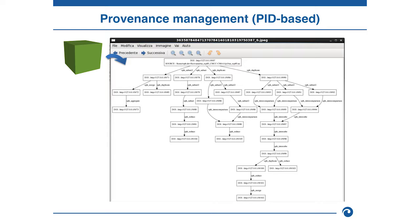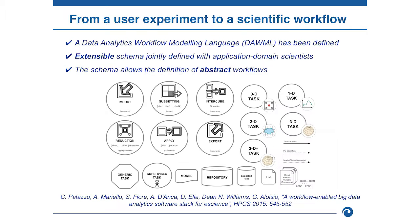Another example of provenance management — this is a more complicated example. As you can see, we have many branches starting from a single input cube, with many operations reaching a set of outputs. As I said at the beginning of my presentation, the architectural version 2.0 moves to develop a new feature concerning specifically the support for workflow management. We developed another module integrated into the server in order to manage workflows, manage dependencies between tasks, and allow users to use complex operations such as loops, variable definitions, and so on.